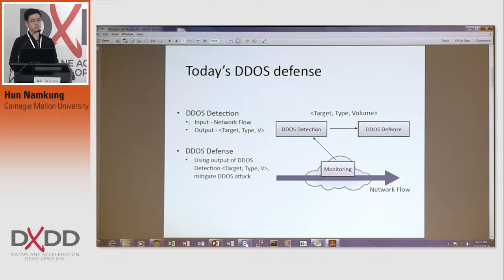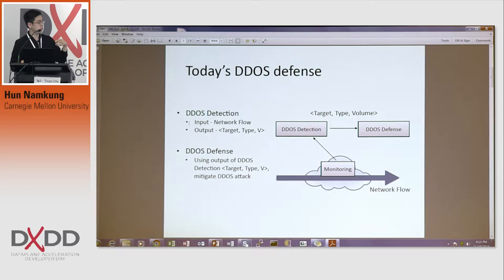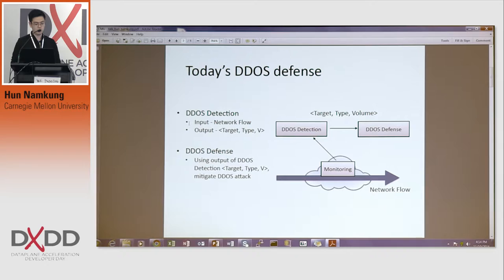I want to talk about today's DDoS defense. DDoS is a pretty hard issue nowadays — especially two weeks ago there was a large DDoS attack. There are two parts to DDoS defense: detection and defense. The monitoring machine is not at the edge network but in the middle of the network. The DDoS detection logic takes network flow — packet flow from a monitoring machine like a switch — as input, and the output is the target, type, and volume: which target is under attack, what type of DDoS attack it is, and the volume. The DDoS defense logic can then use that information to perform mitigation.